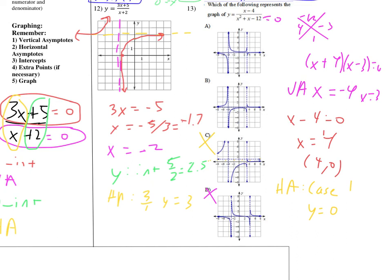The only thing left to check is the y-intercept. Plugging in 0 for x, we divide the constant terms: negative 4 divided by negative 12 gives positive one third. So we need a point at (0, positive one third). One remaining option appeared to be at negative one third, so that can't be right. The answer must be option A. No single piece of information narrowed it down, but checking all four characteristics got us the answer.